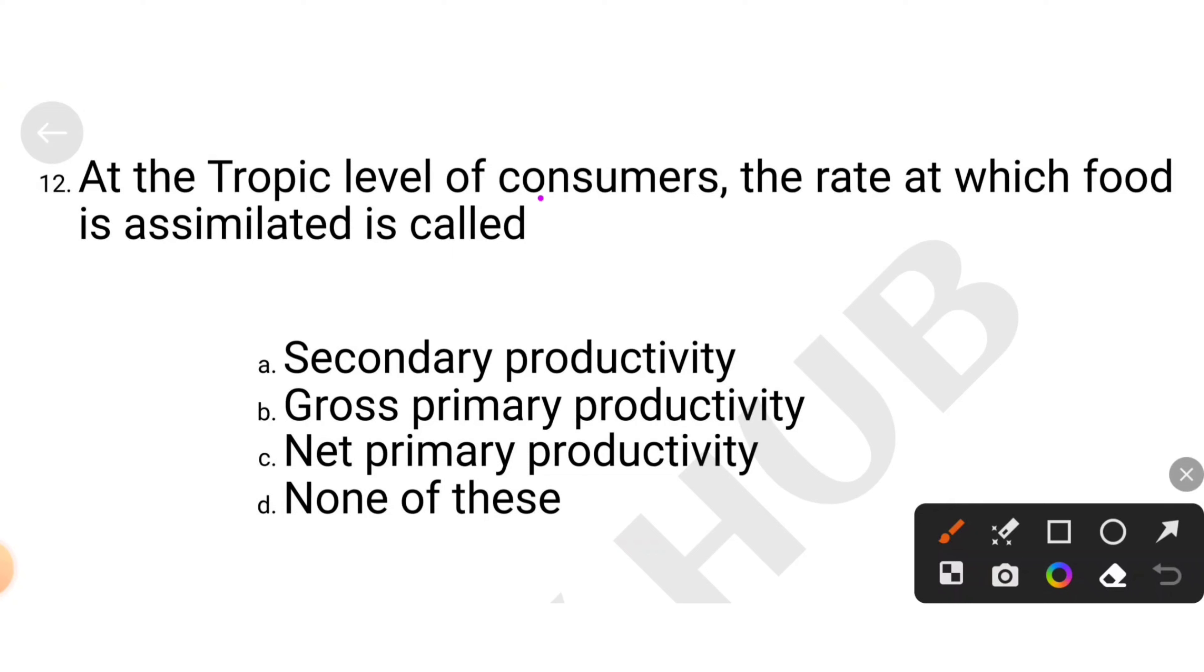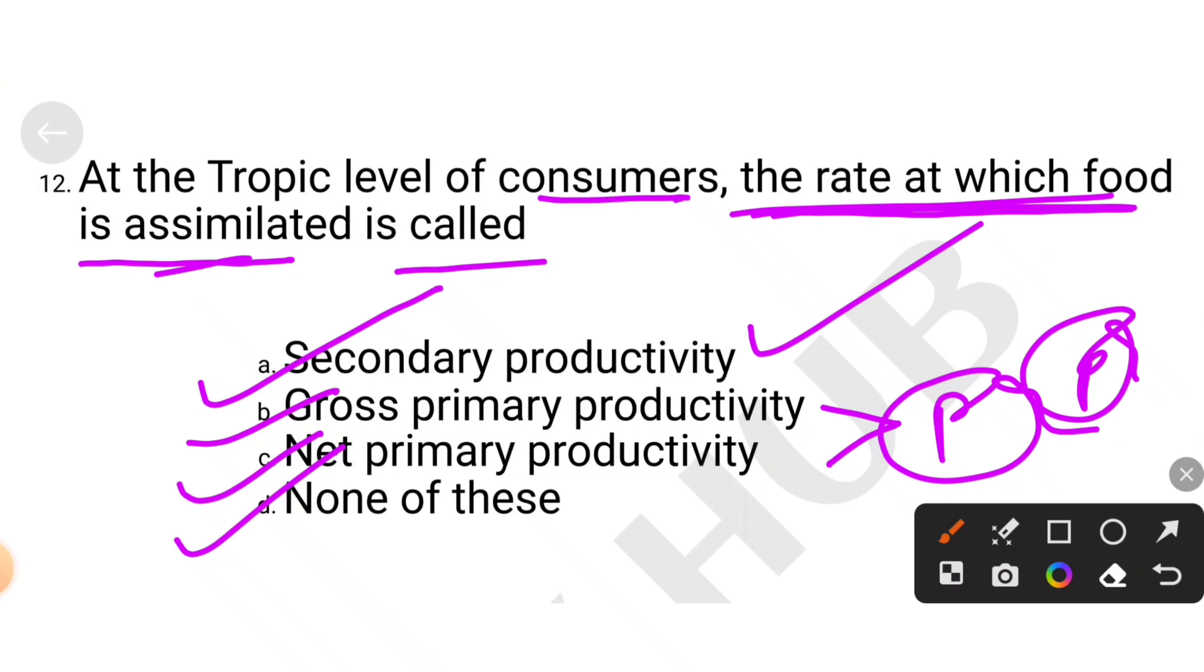At the trophic level of consumers, the rate at which food is assimilated is called Secondary Productivity, Gross Primary Productivity, Net Primary Productivity or None of these. The rate at which food is assimilated, net and gross come in primary, they produce food. They assimilate food, comes in secondary productivity. The correct option of this question is secondary productivity.